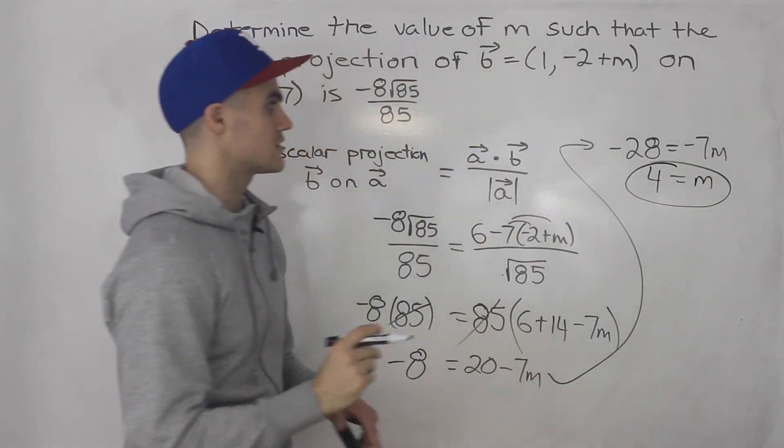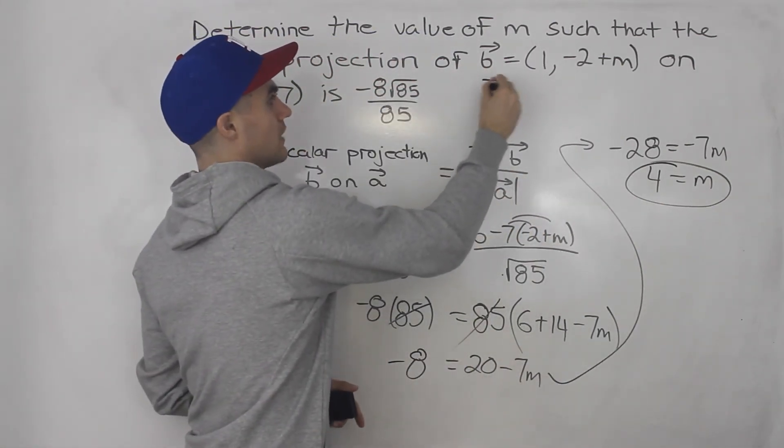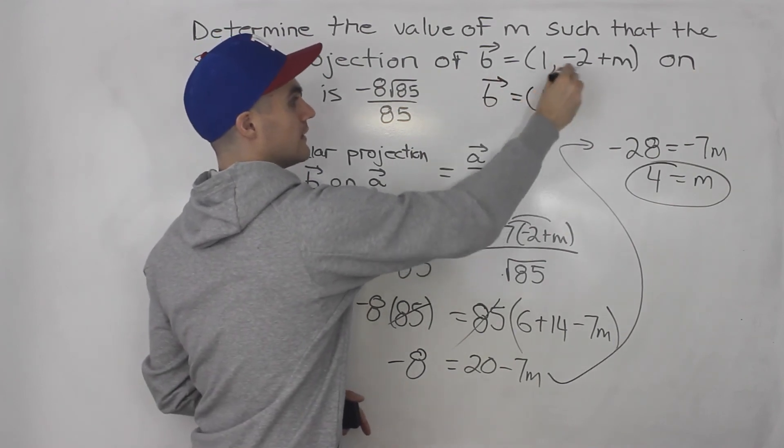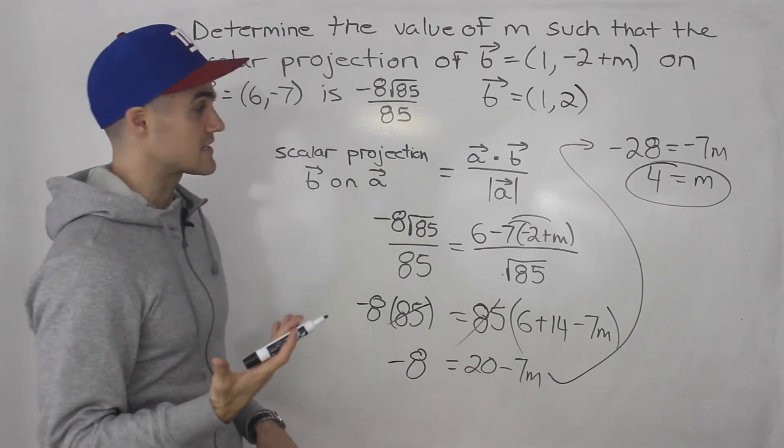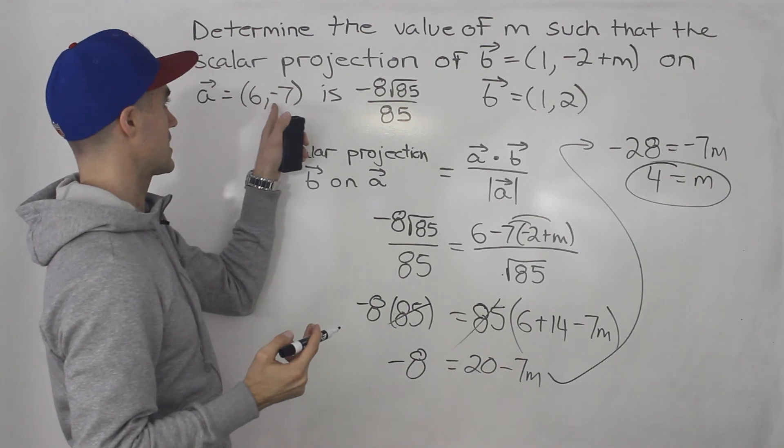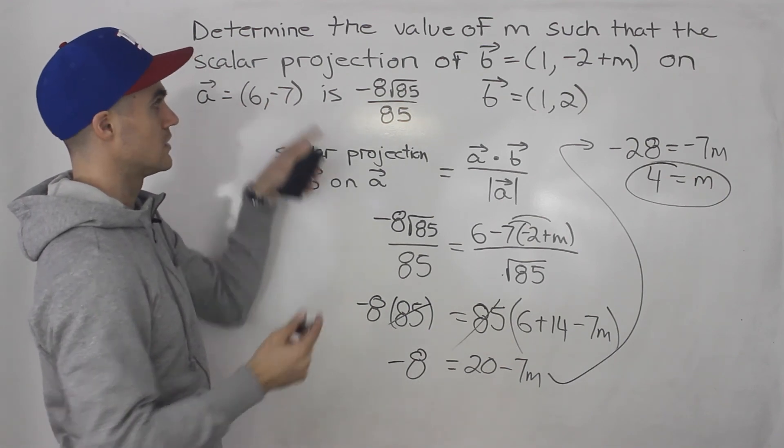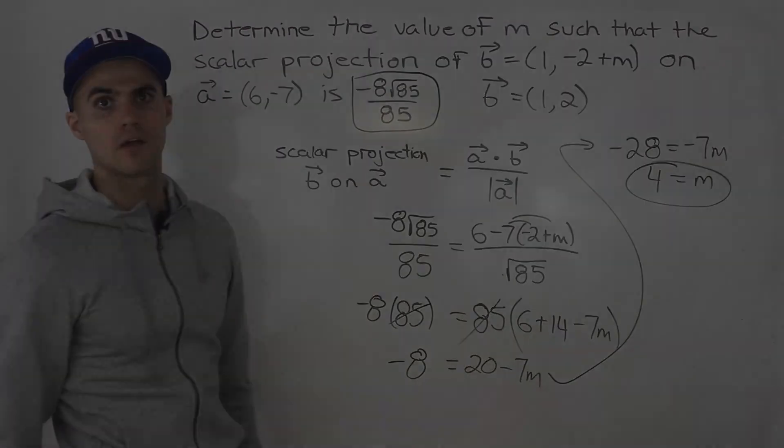That there is your final answer. So vector b would actually be 1 and -2+4, which is 2. So if you find the scalar projection of vector b (1,2) on vector a (6,-7), you should get this value. That's how you can check your answer.